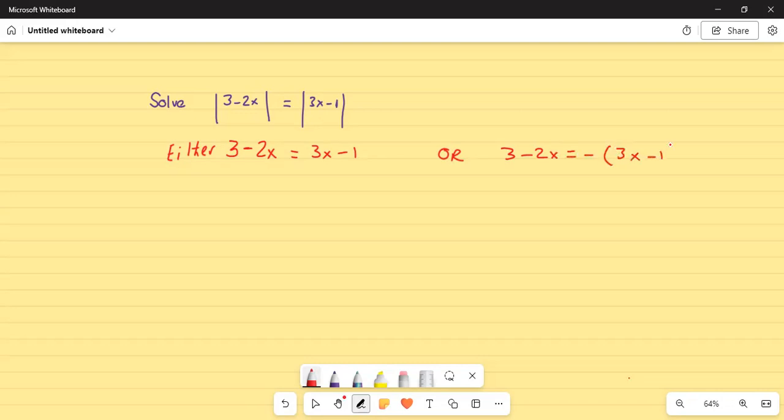Now, you ask me why it is minus on the right-hand side of the equal sign, because think about it, if you take the absolute value, the minus sign will disappear and it will become 3x minus 1. So, let's solve this equation then.